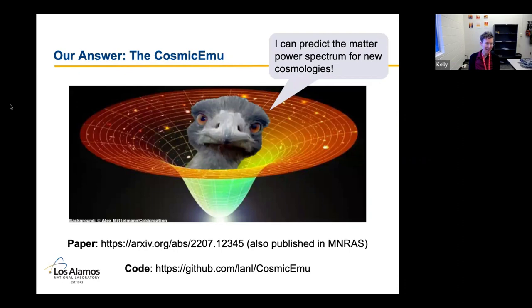And so I'll spend the rest of the talk here covering how to build an approximation to a simulator called an emulator, which is getting at this question of how to approximate the results of these computationally intensive simulations. So our answer to this question was the cosmic EMU, which is able to predict the matter power spectrum for new cosmologies. There's a paper out on this, which is about to be published in MNRAS. I think the preprint is online and the code is publicly available at LANL's GitHub. And the rest of my talk, save for the last few slides, is going to focus on how we built this EMU.